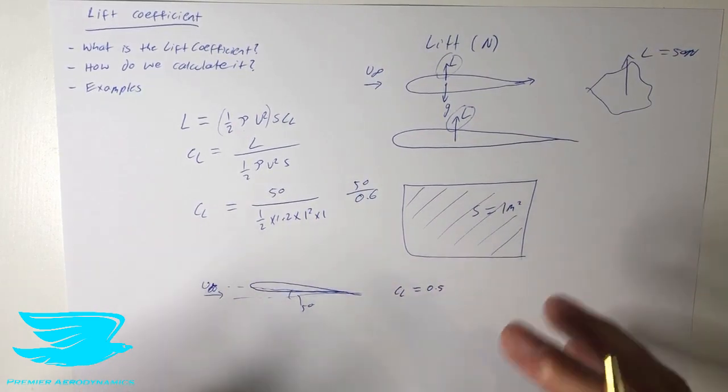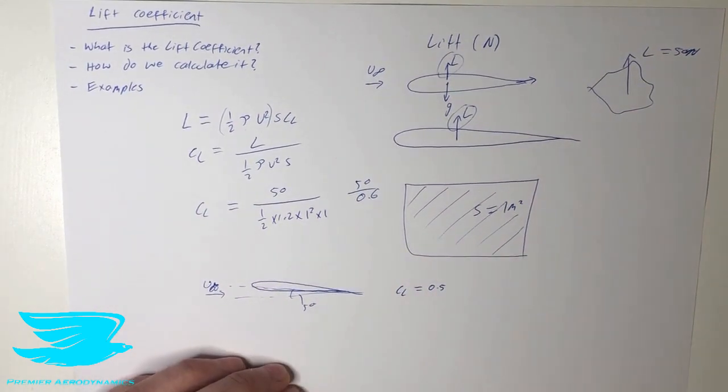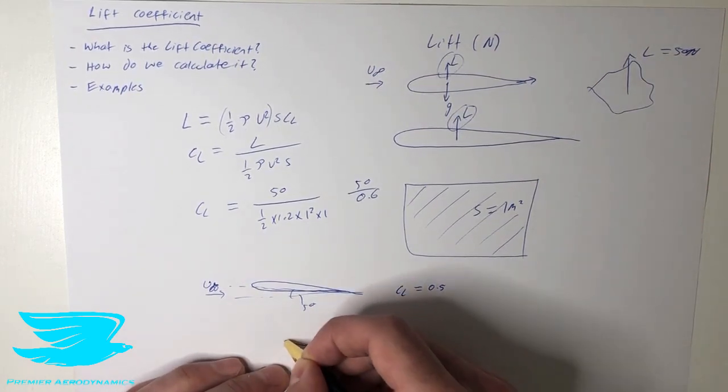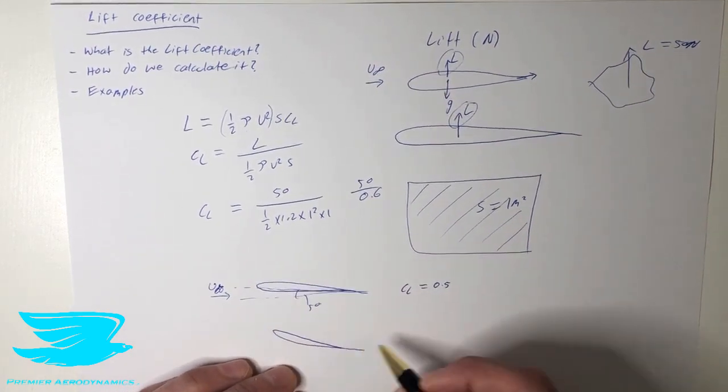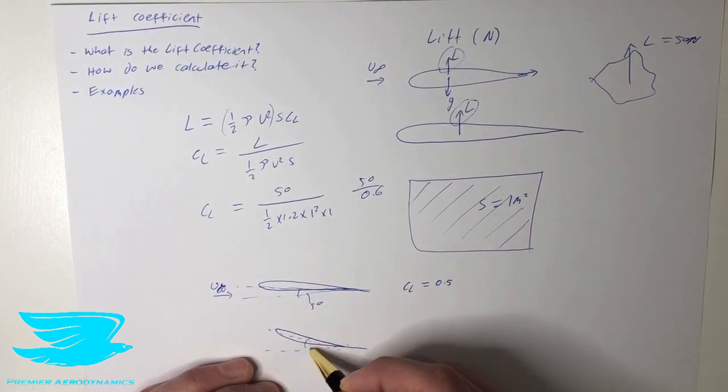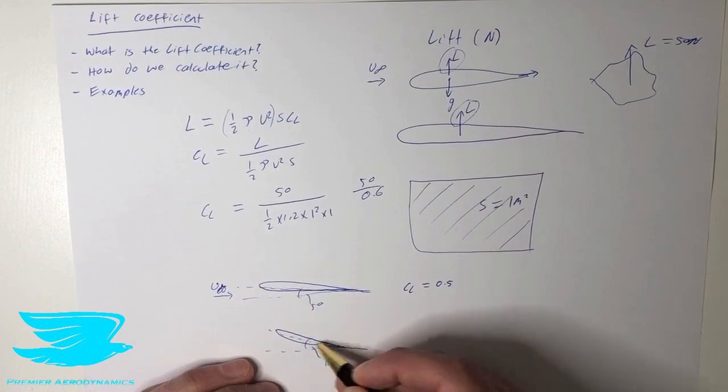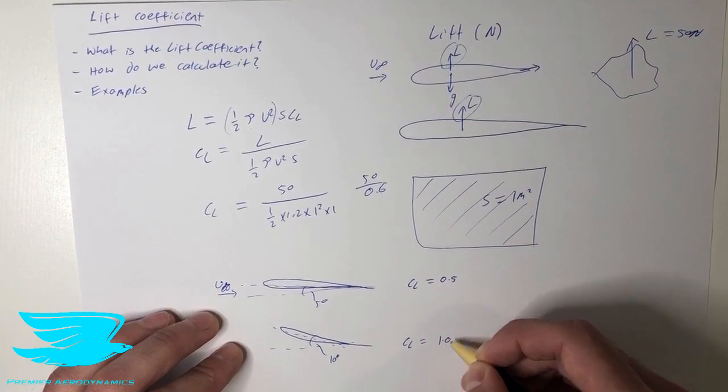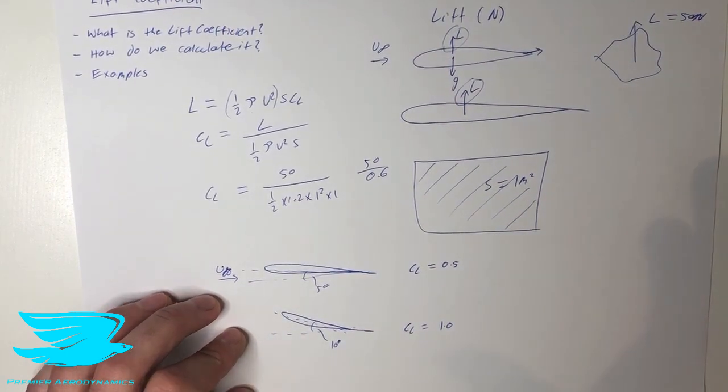So typically an airfoil like this, at this angle of attack, we're going to be having a lift coefficient of about 0.5. It depends on the airfoil, but that's a general ballpark figure. Now, let's say we put the airfoil up even higher, and let's just exaggerate this and let's say it's 10 degrees. Now the lift coefficient is now 1.0, which is again, a fairly standard ballpark figure.